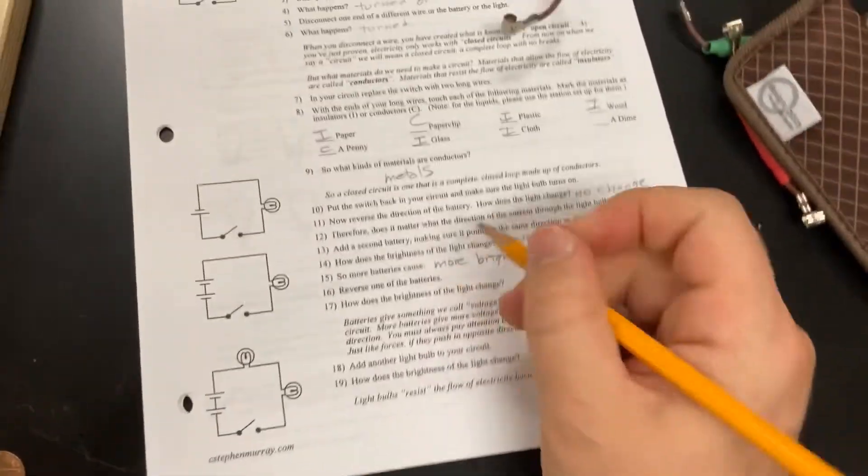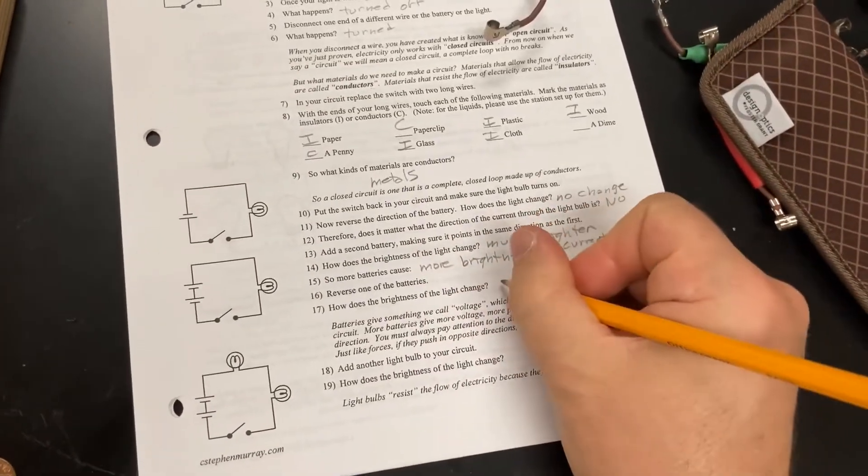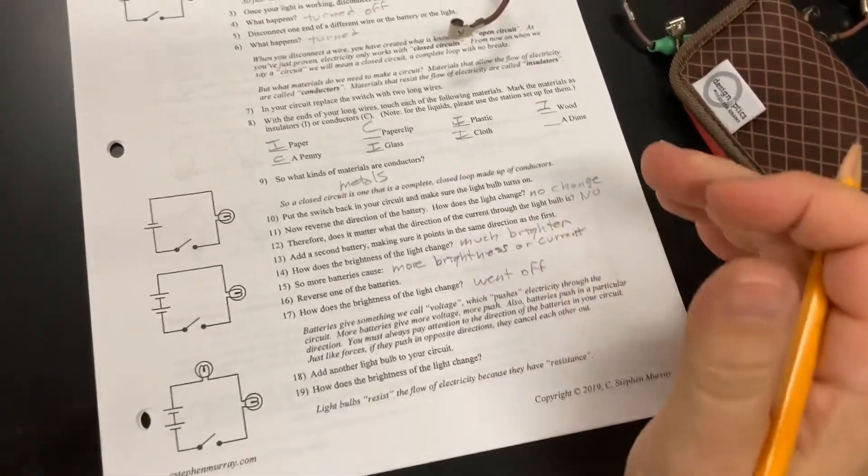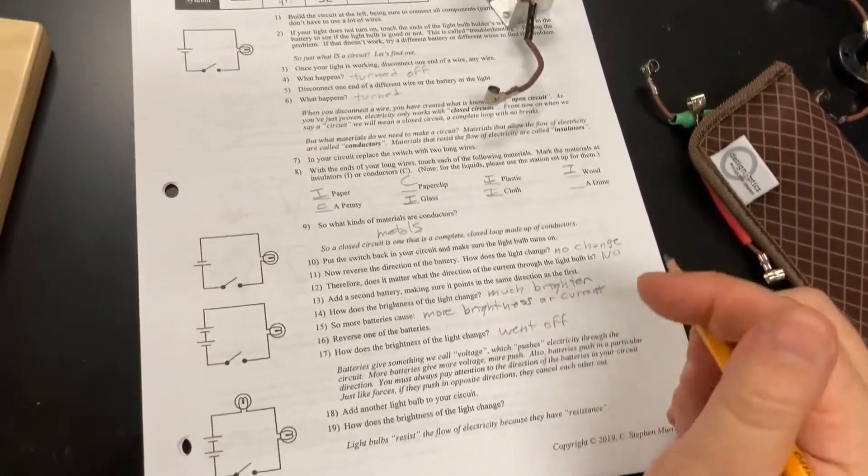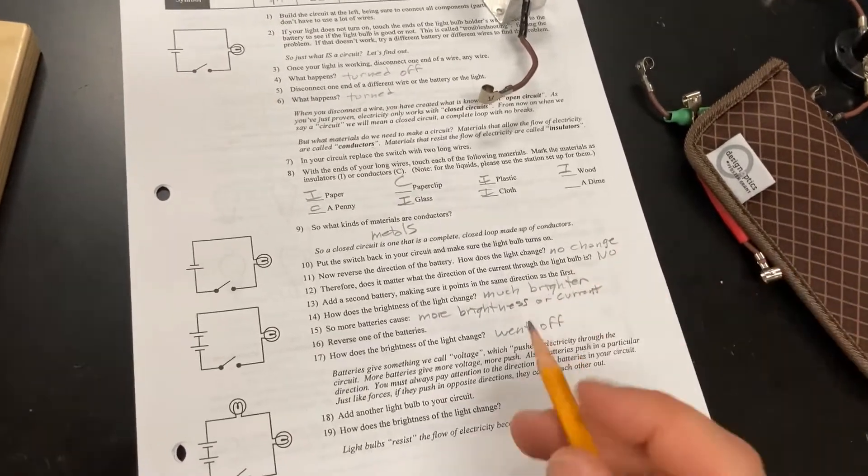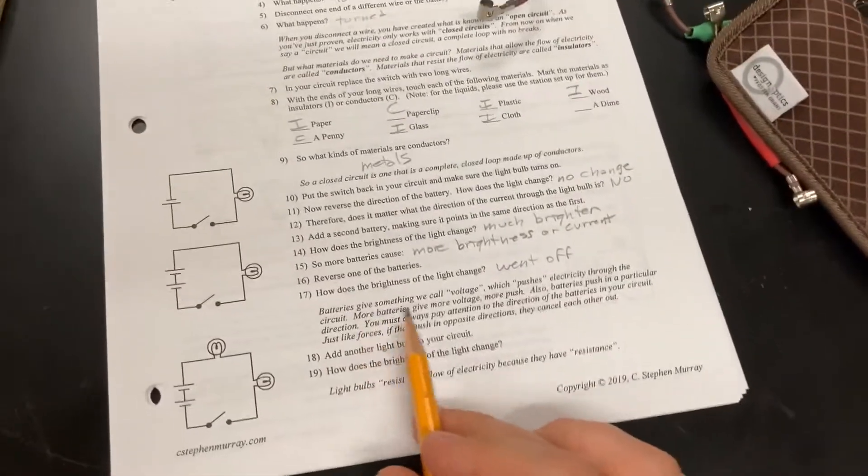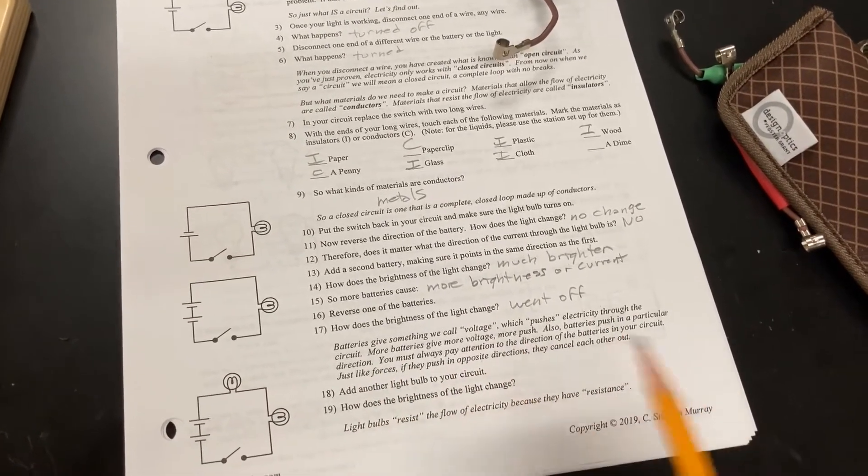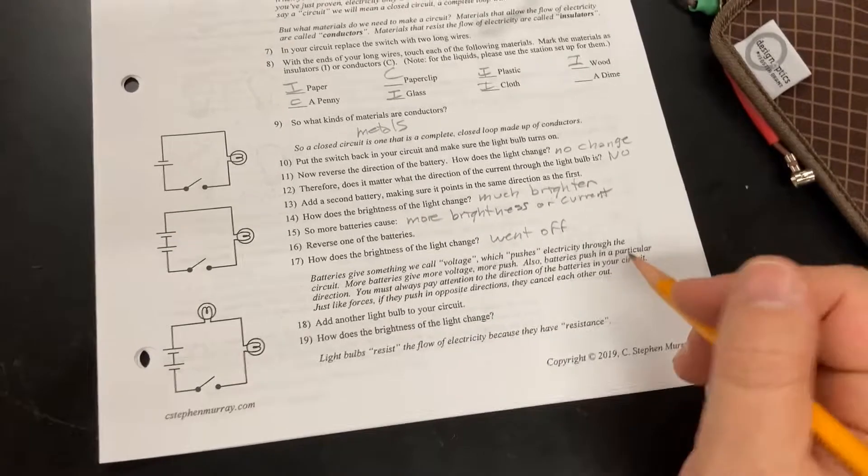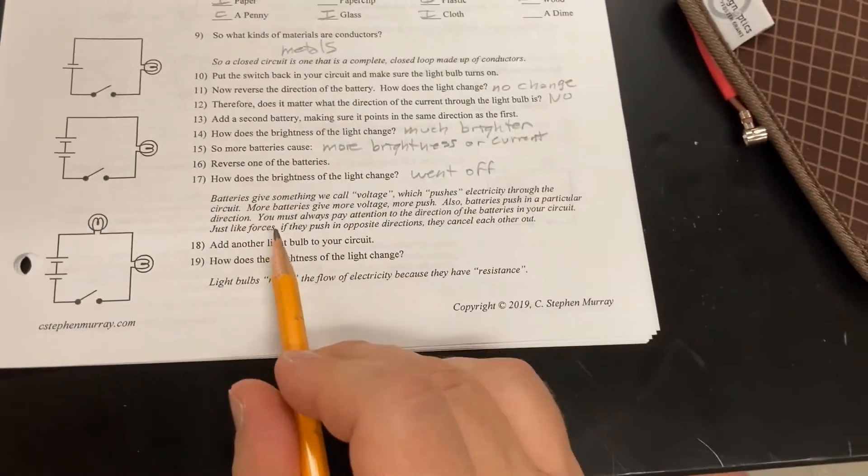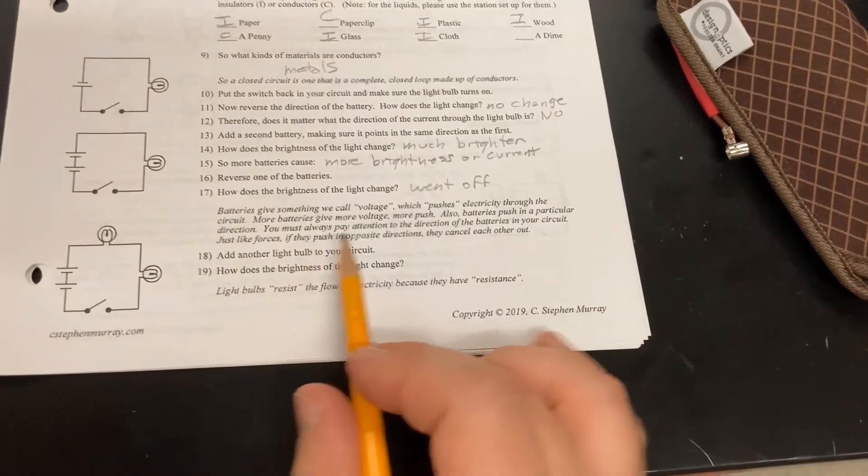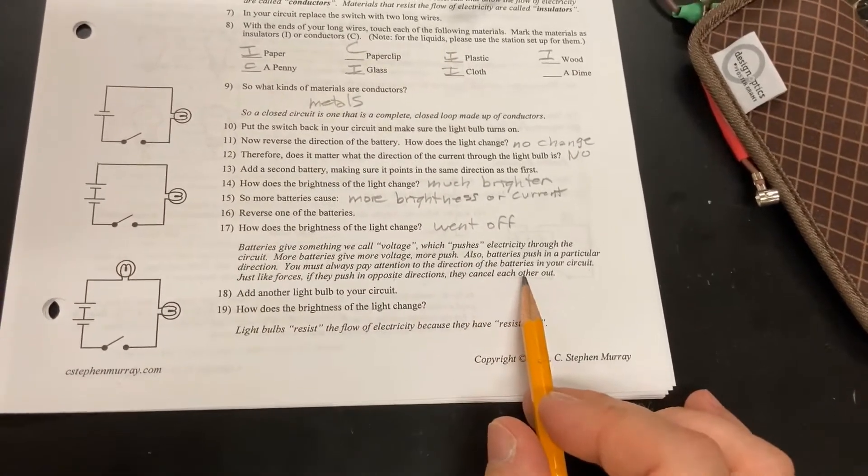Okay. So, let's see what it says over here. Reverse one of the batteries. How does the brightness light bulb change? It went off. Now, if you have one battery that's new and another battery that's weak, it's possible that it came on, but really small. Or very, very dim. Batteries give something called voltage, which pushes electricity through the circuit. More batteries give more voltage, more push. Also, batteries push in a particular direction. We just saw that. You must always pay attention to the direction of the batteries in your circuit. Just like forces, if they push in opposite directions, they cancel each other out.